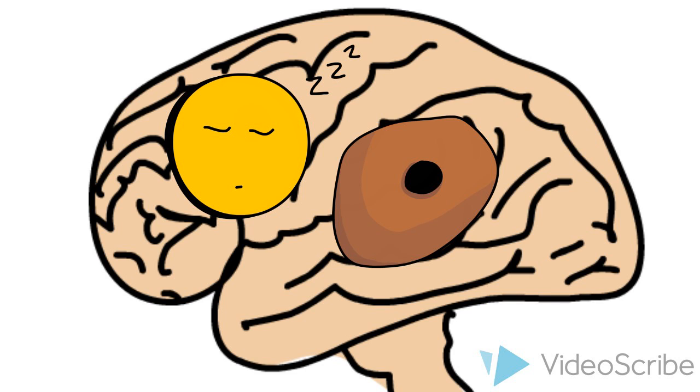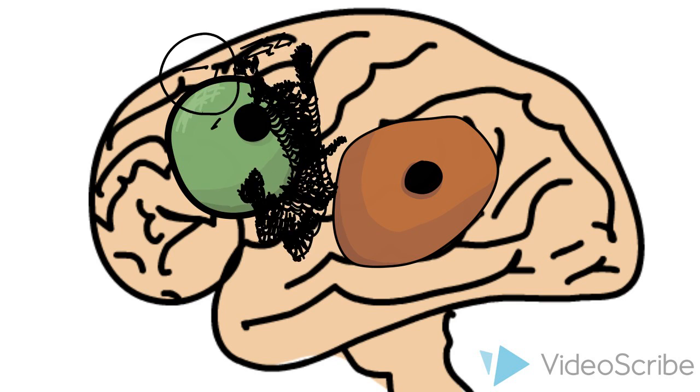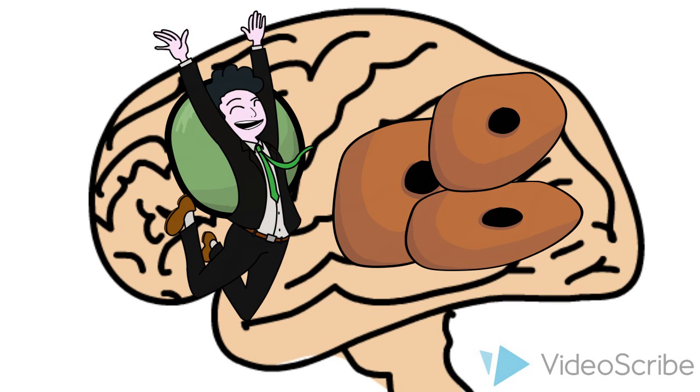But whenever we injure the brain or get rid of the other stem cells, we find the primitive neural stem cells wake up and regenerate the lost cells.